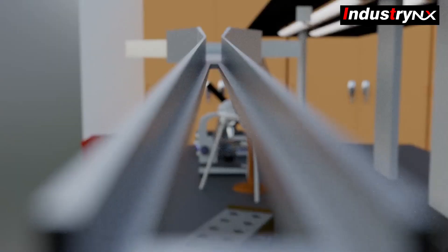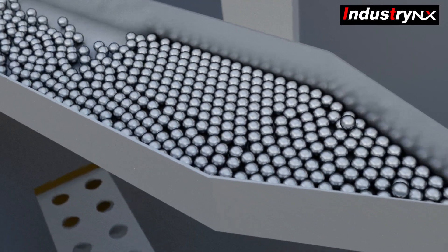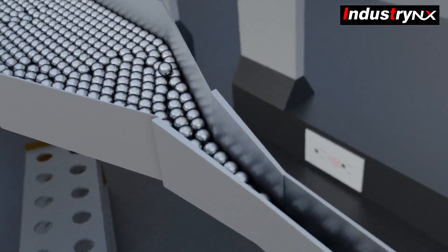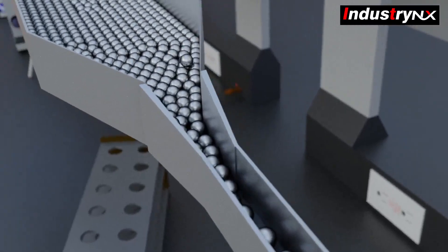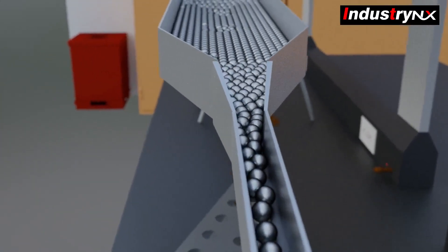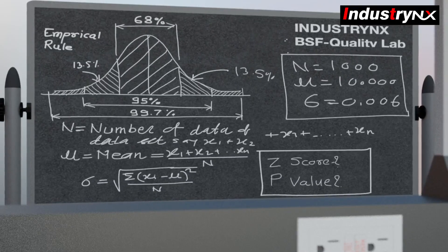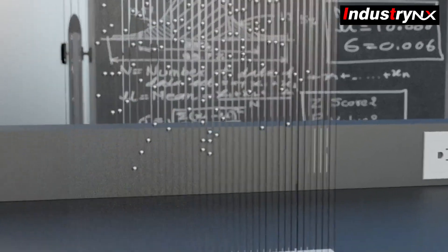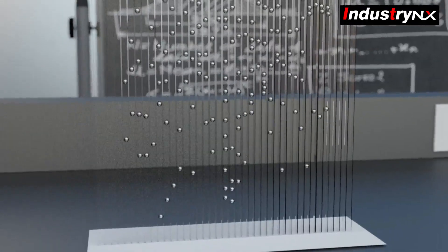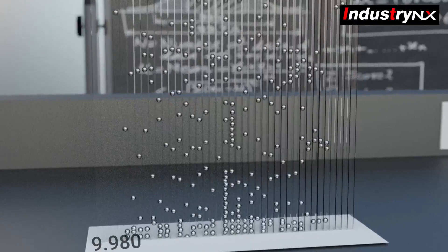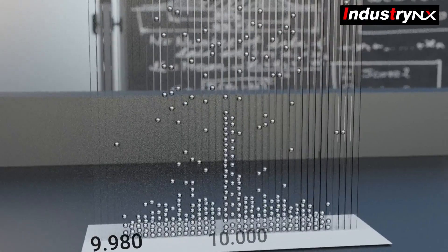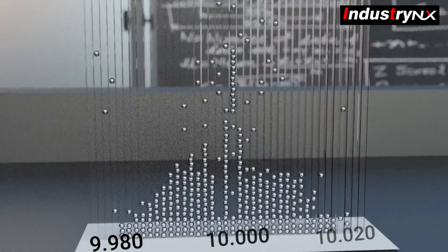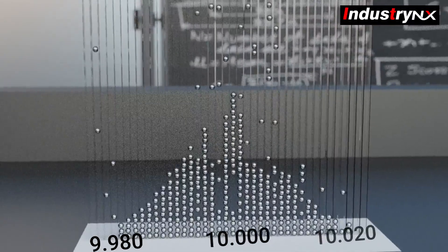The tapered chute and sorting compartments have been designed to sort balls after every 1-micron increase in ball size. The leftmost compartment collects all balls with diameter 9.980mm, the rightmost compartment collects 10.020mm balls, and so on.